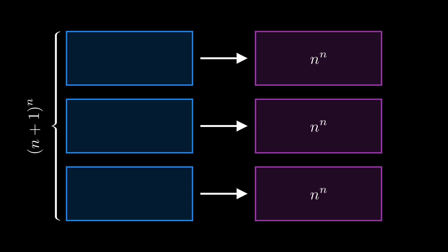Importantly, the three sets on the left don't have to all be the same size. As long as each is smaller than the n to the n set on the right, we're in good shape.